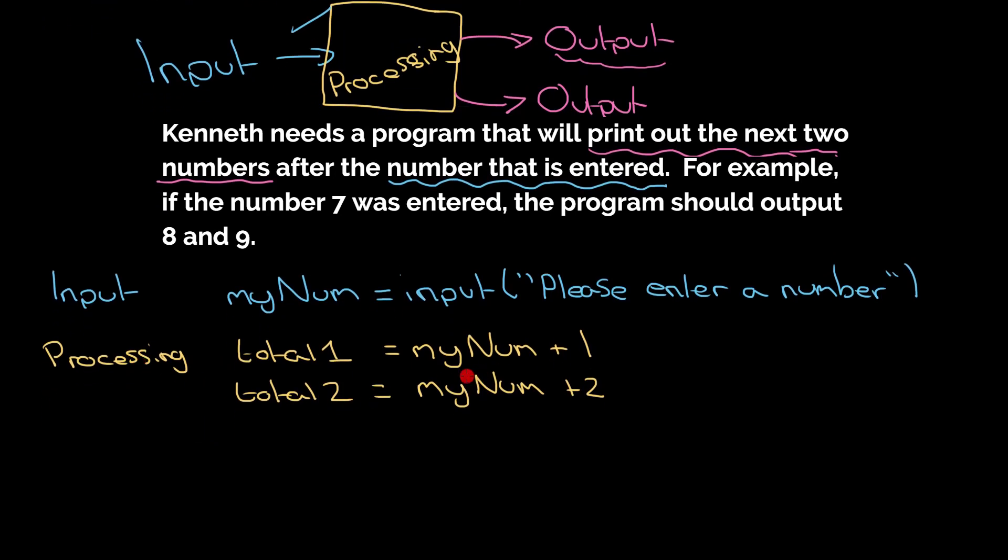So now I've got these two things. I need to get them to the screen. And I can usually get, well, I can definitely print stuff to the screen. If I print stuff to the screen, then that is my output. So that will appear on the screen to the user. So print total one and print total two.